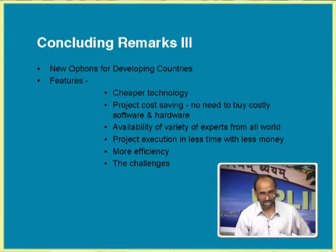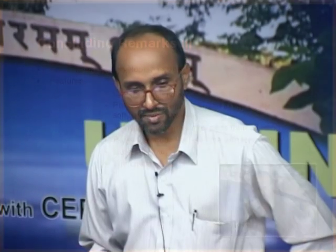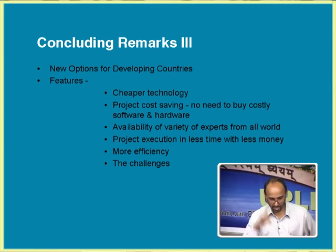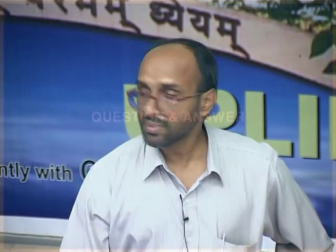There will be new options for developing countries like India. To buy sophisticated software costing 5 to 10 lakhs — even DHI software like MIKE21 costs about 20 lakhs — is impossible for us. But if agencies allow us to utilize their software for a few days by paying a small amount, we have a great advantage. We are having cheaper technologies, project cost saving, availability of a variety of experts from all over the world, and more efficiency. But there are lot of challenges, and a lot of scope for research contribution in making efficient hydroinformatic systems.